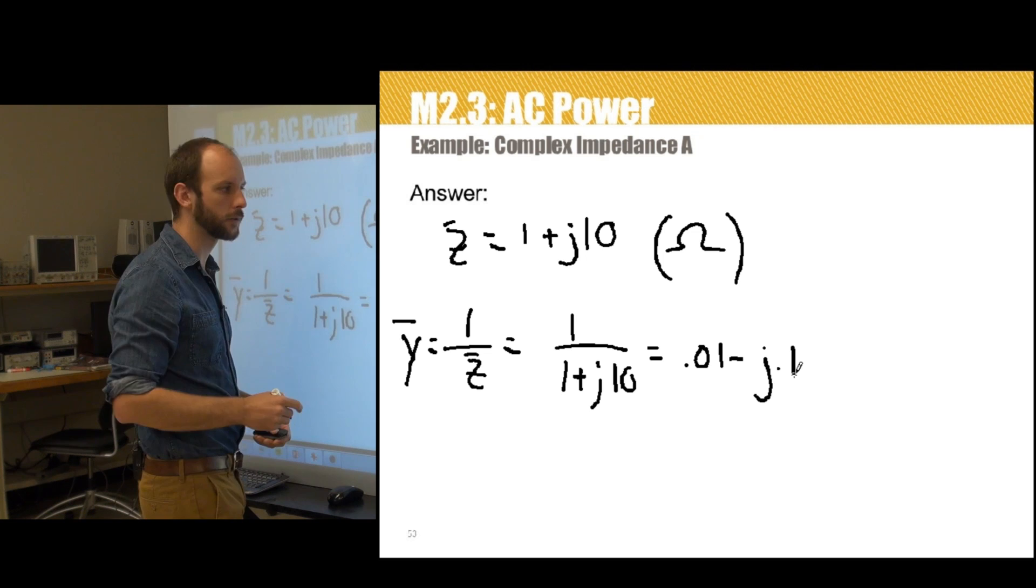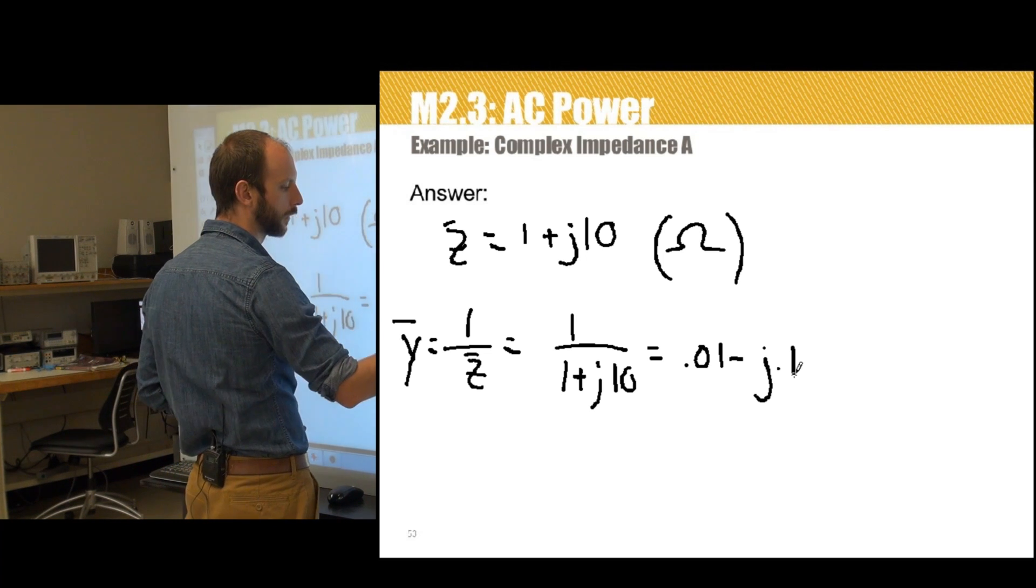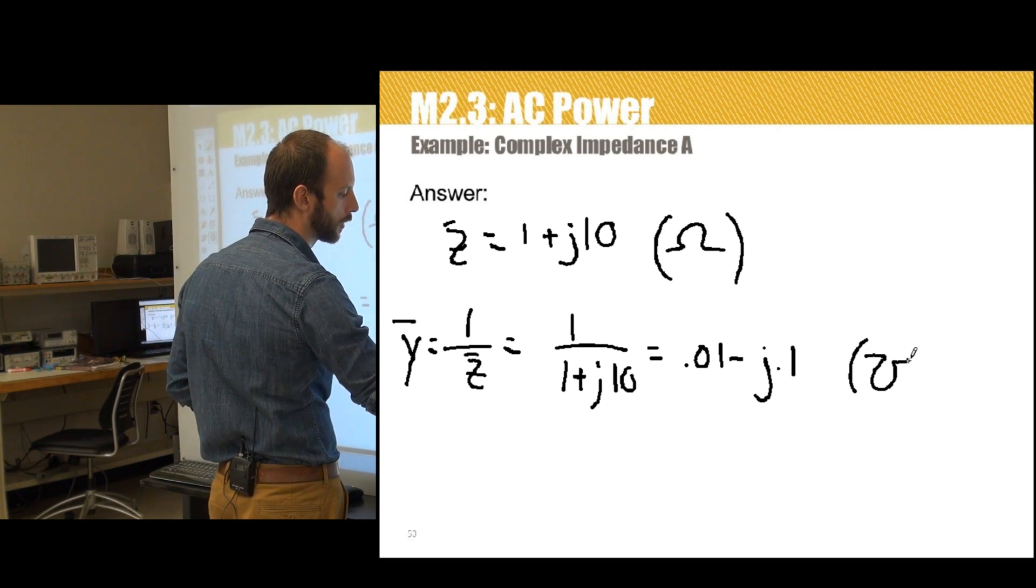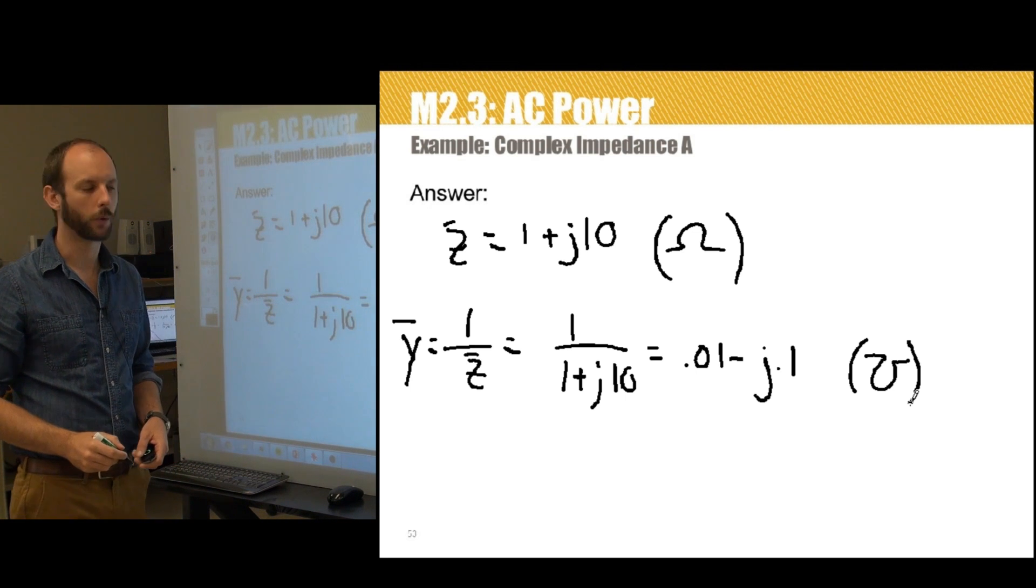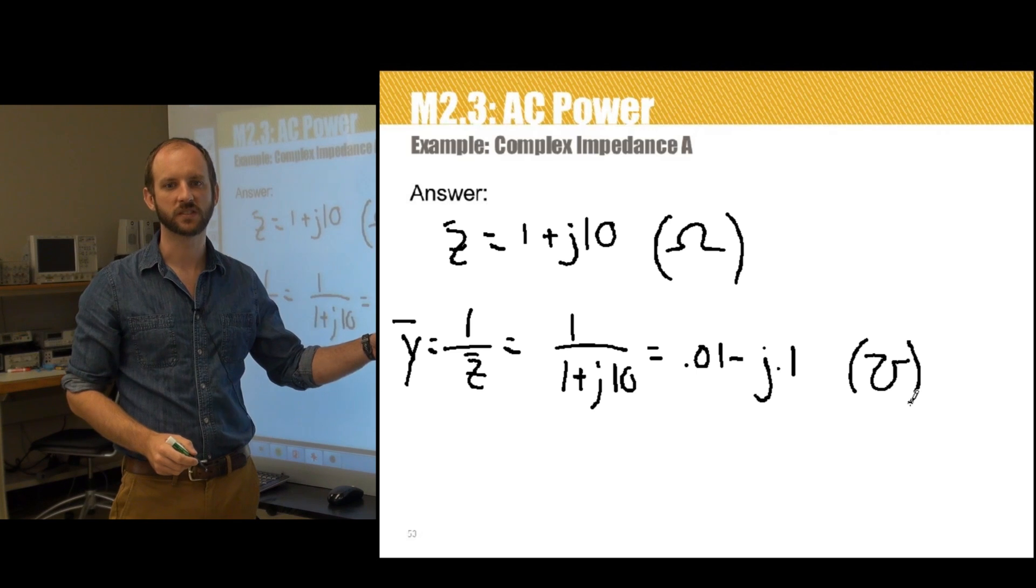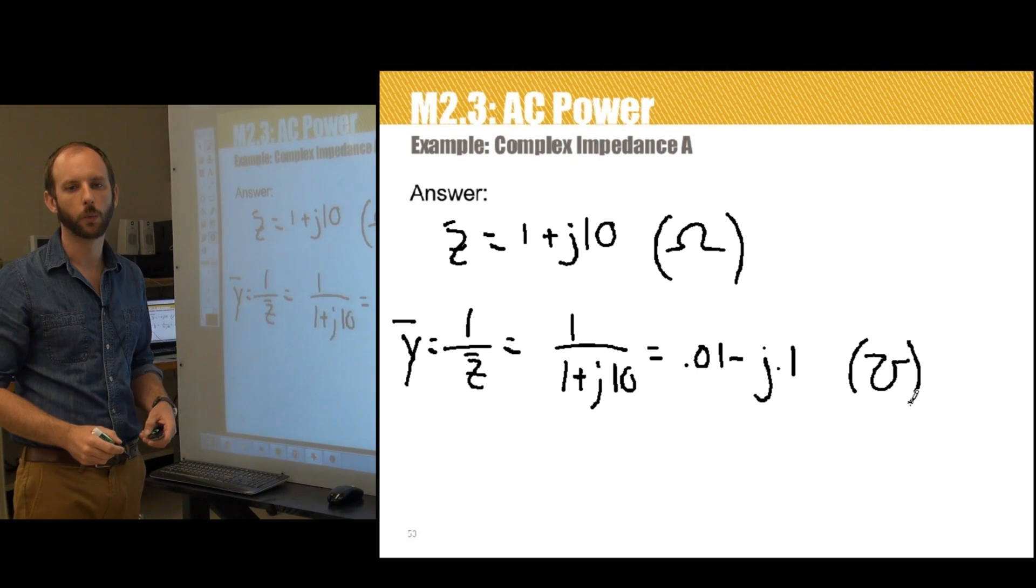Since we were in ohms before, this is an inverse quantity and it's now measured in Mohs. The conductance is therefore 0.01 Mow and the susceptance is 0.1 Mow.